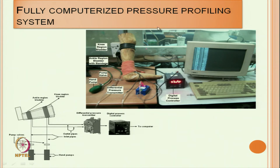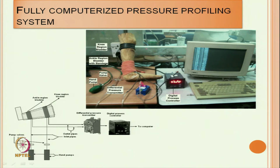This is the system photograph, and construction-wise it is a similar construction - the air bladder is there. The only change here is that instead of a manometer, we have used a pressure sensor which is connected with the computer. This is the same setup, and the compression bandage here is shown at the ankle zone where it is wrapped and pressure is monitored with time.